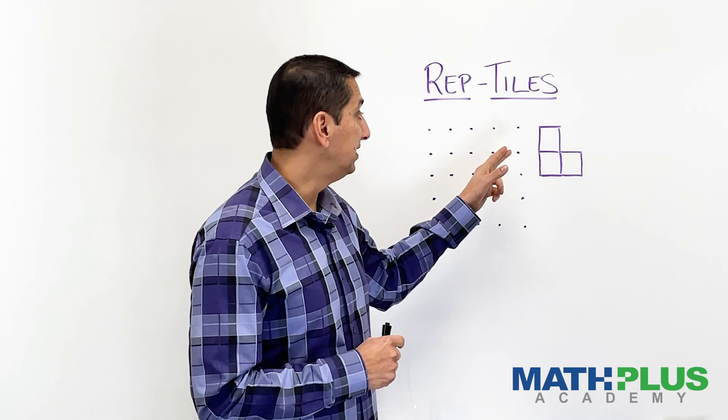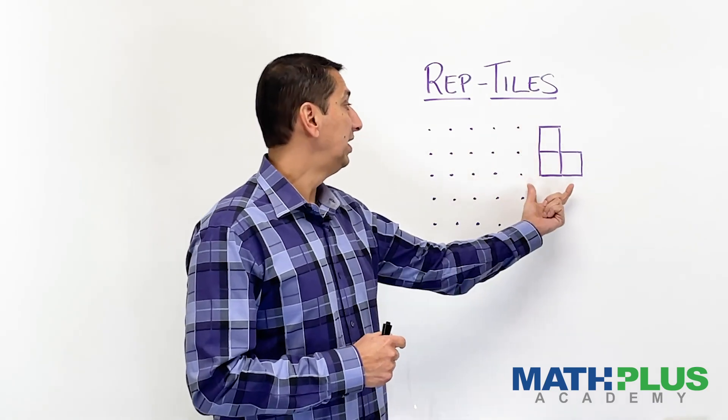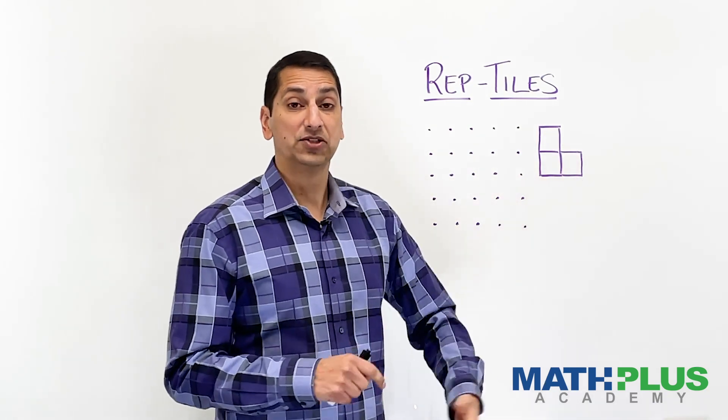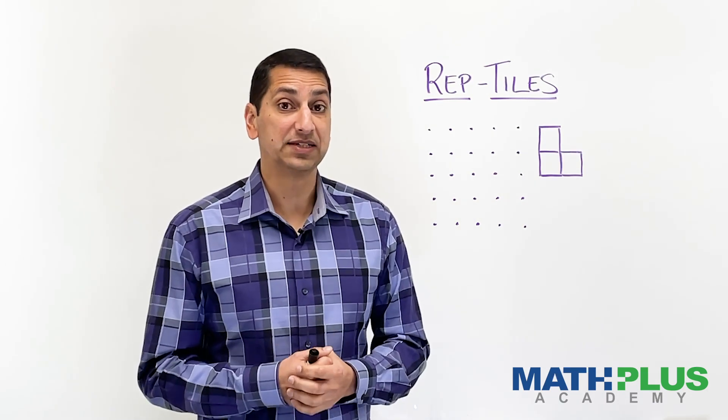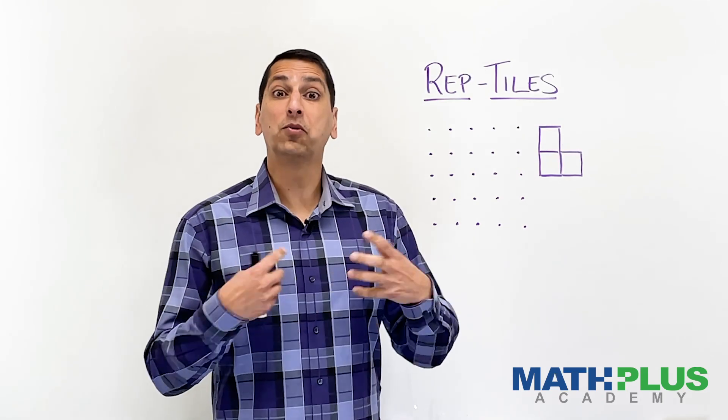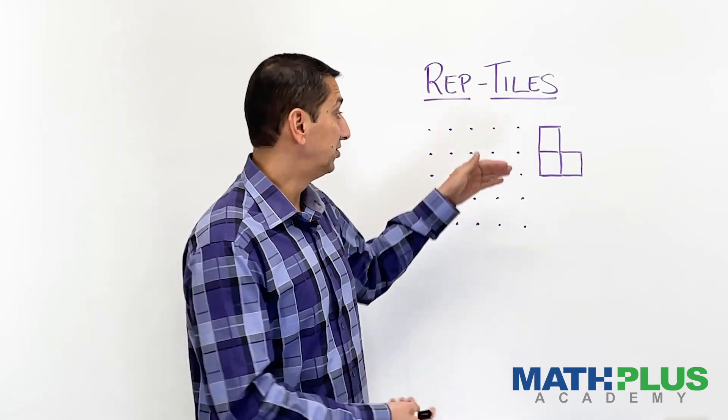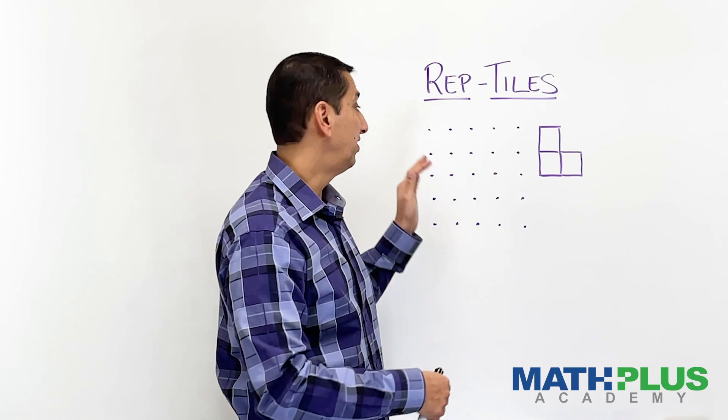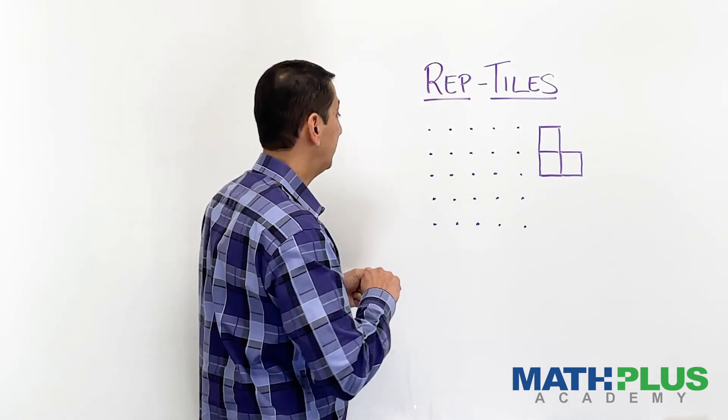As you can see, this L-triomino is two squares tall and two squares wide. So a question we could ask is, can we make the same L shape but twice as big as this one? So four squares high and four squares wide. So I've made a little dot matrix here so I can kind